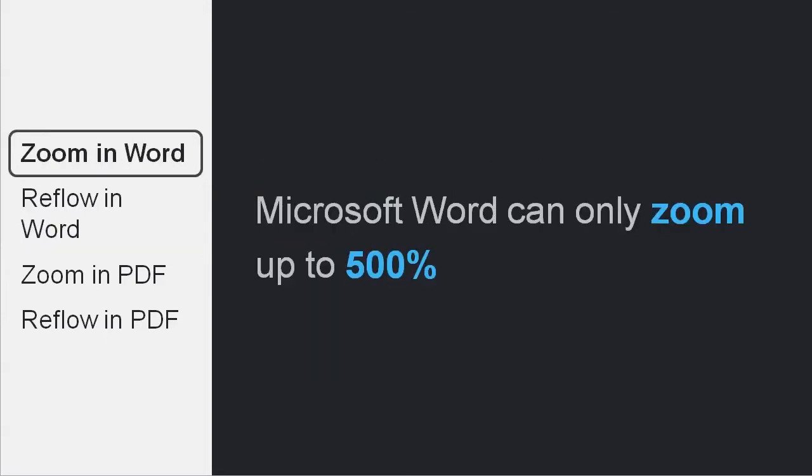However, zooming in Word has another limitation, and that is that Microsoft Word can only zoom up to 500%. And that really is not enough for many people with visual impairments. Let's have a look.